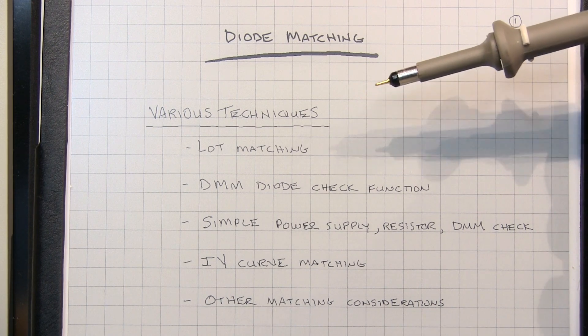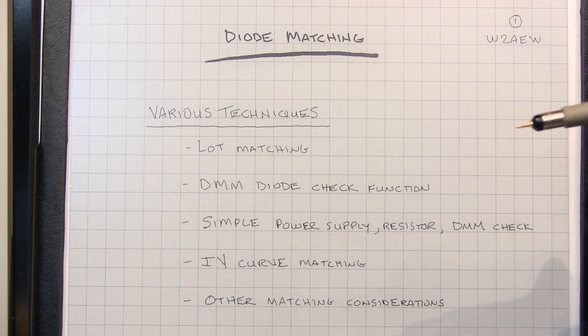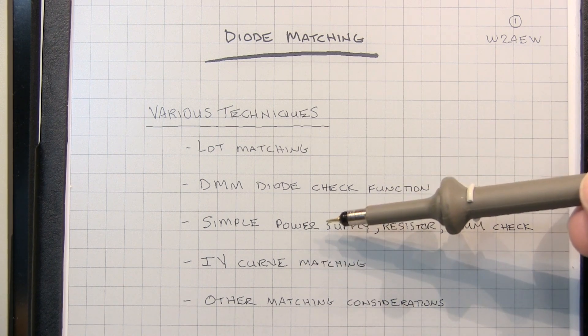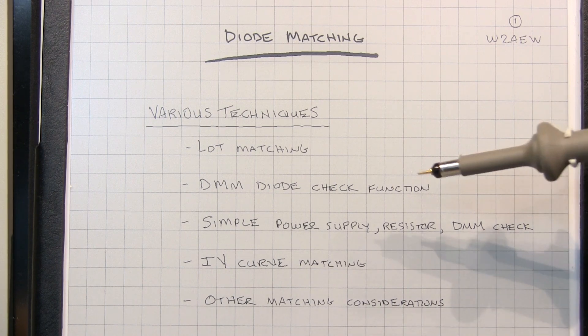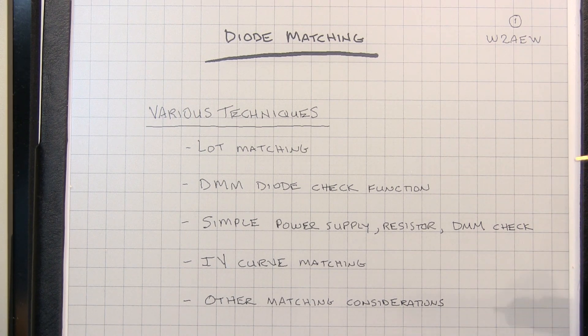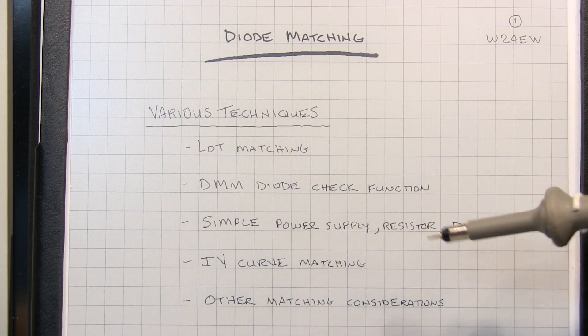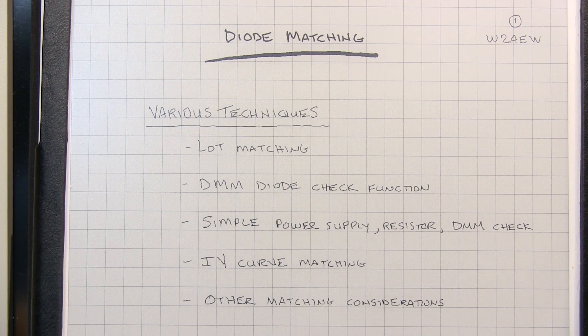Let's talk about a couple of techniques for matching diodes by just using the manufacturing lot when you buy them, or maybe using the diode check function that is in your DMM. It's a simple way to measure them and match them, or maybe you'd put together a simple circuit with a power supply and a resistor using a DMM to check and match the characteristics of a diode, or maybe do a more extensive voltage current or IV curve matching technique, and then we'll finally talk a little bit about some other matching considerations that might be important depending on the type of application or circuit you're working with. So let's get started.